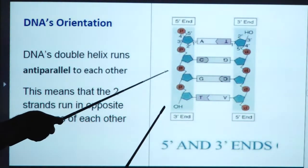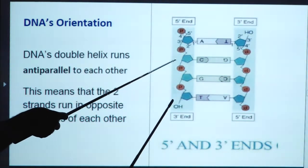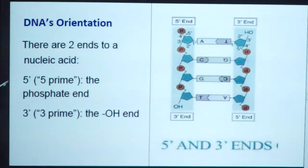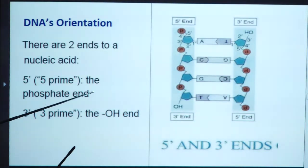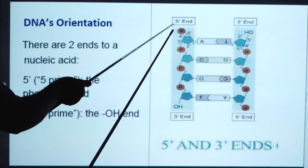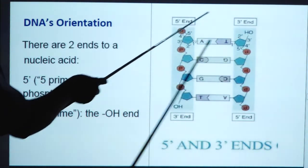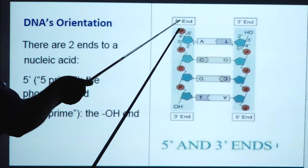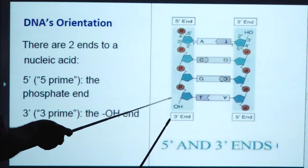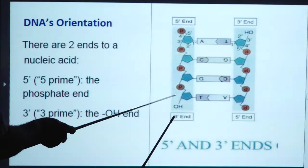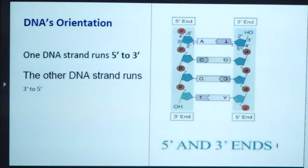Both strands are running in opposite directions. There are two ends to a nucleic acid: the 5' end, that is the phosphate end, and the 3' end, that is the OH (hydroxyl) end. One DNA strand runs from the 5' end to the 3' end; the other DNA strand runs in the reciprocal manner, from the 3' end to the 5' end.